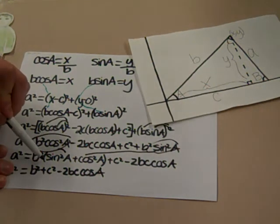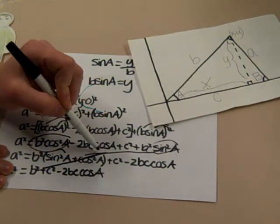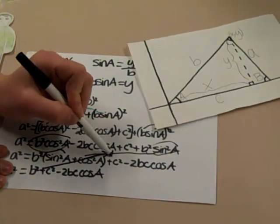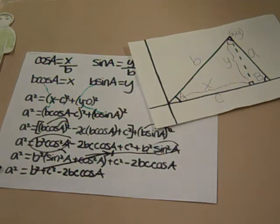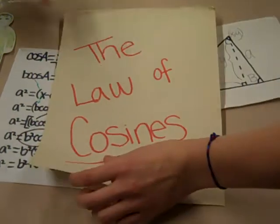Because of Pythagorean identities, we know that sine squared A plus cosine squared A equals 1, so we can cancel out that term. Through this, we get that A squared equals B squared plus C squared minus 2BC cosine A, which is the law of cosines.